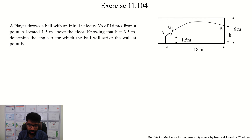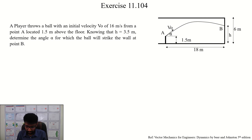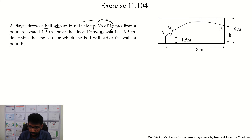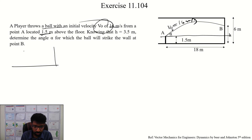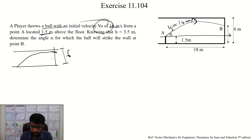Now, we will solve this problem. This player throws the ball with an initial velocity of V0 equals 60 meters per second, from a point located at 1.5 meters. We will go to this point. If you want to hit the target, H is 3.5, which is greater than this value.